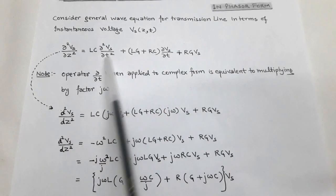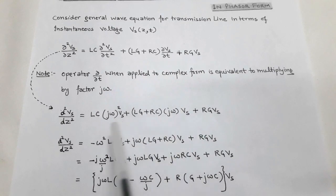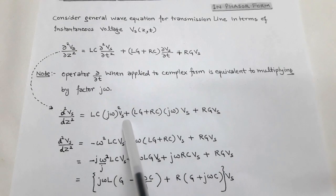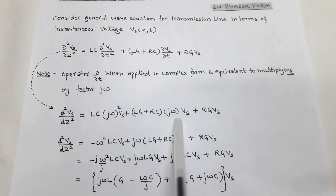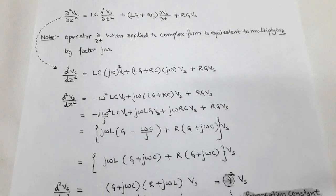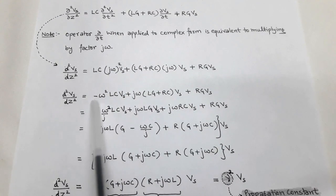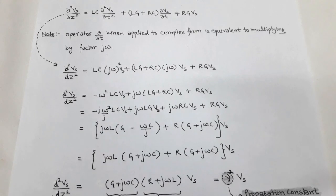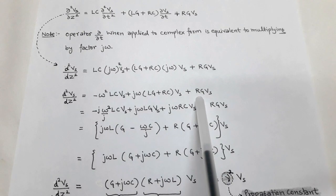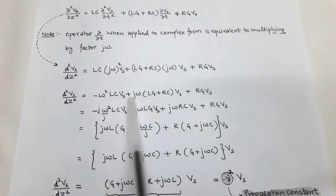After replacing ∂/∂t by jω, we get d²V_s/dz² = LC(jω)²V_s + (Lg + RC)·jω·V_s + RG·V_s. Since j² = −1, the first term becomes −ω²LC·V_s, giving us: d²V_s/dz² = −ω²LC·V_s + jω(Lg + RC)·V_s + RG·V_s. Here we have three terms, all containing V_s as a common factor.